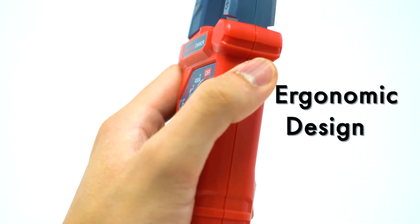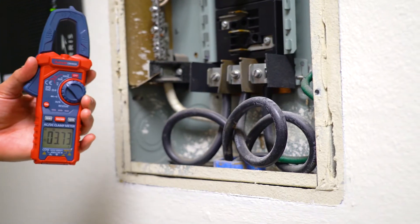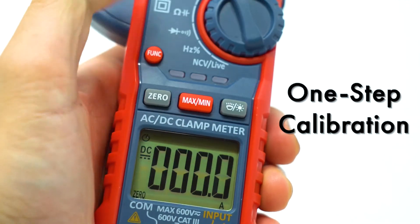Quickly capture readings with the hold button. For more precise results, use the zero button to calibrate the meter before taking a measurement.